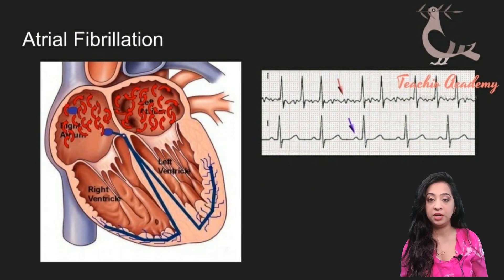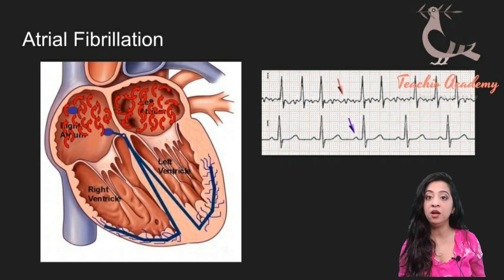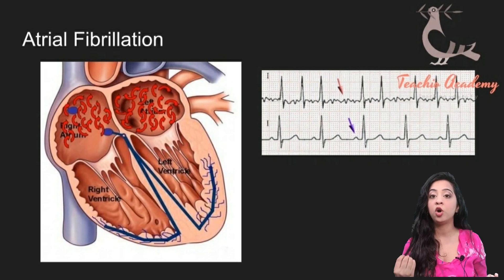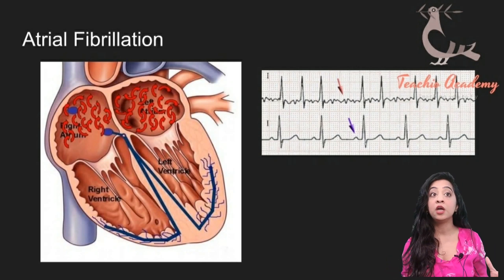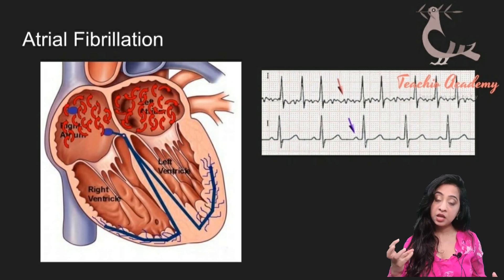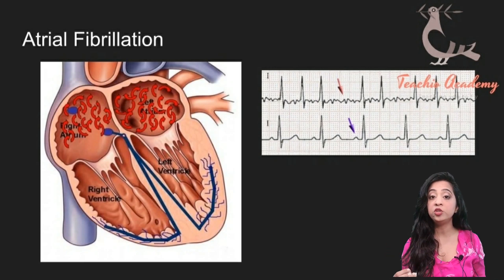Let's talk about atrial fibrillation. If you break down those two words, they tell you the answer. Atrial means something is happening in the atria — the top part of the heart — and fibrillation means small contractions. So there are basically small tremors of the atria and chaotic electrical activity, which is going to look on your ECG like what you see on the screen.